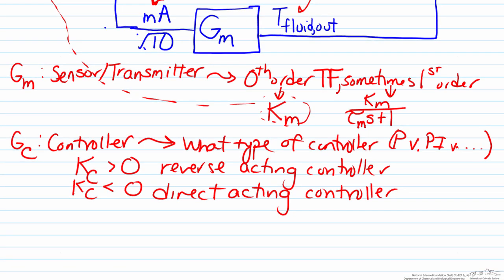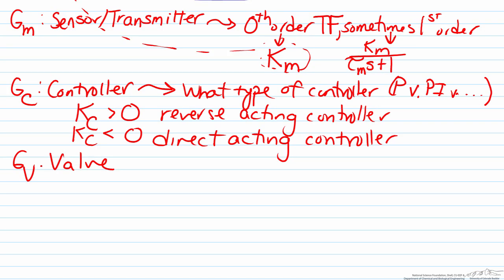We'll move along to the next block which is GV, that is the valve transfer function. Valve transfer functions are typically similar to the sensor's zeroth or first order transfer functions. So here we would have either KV or KV over tau V s plus one.